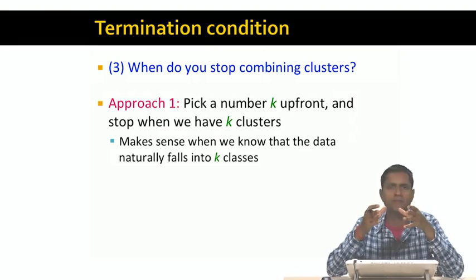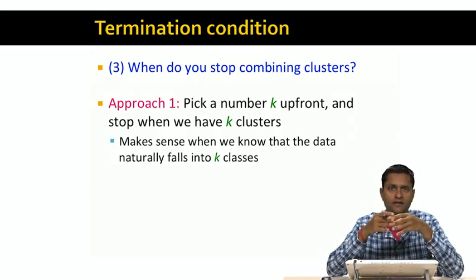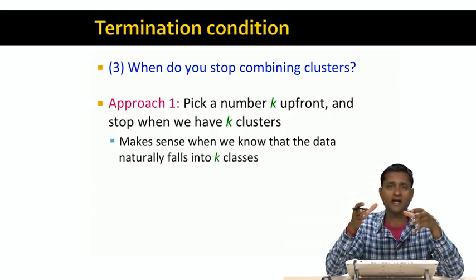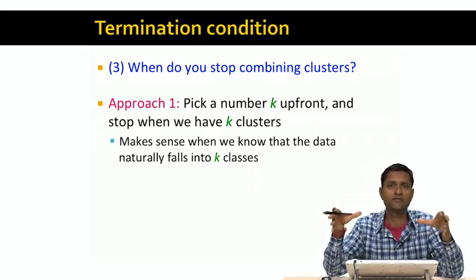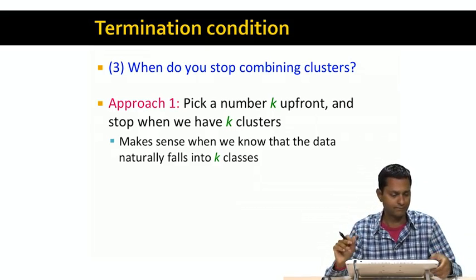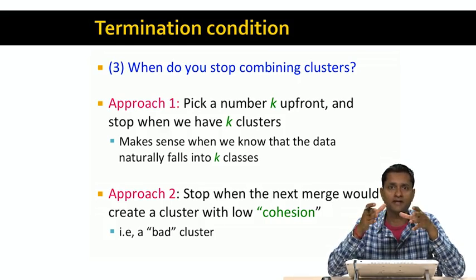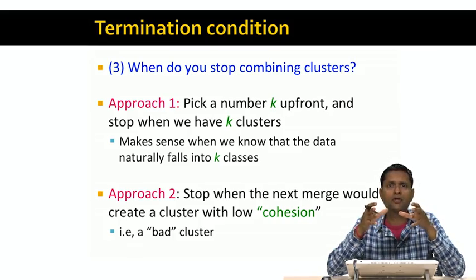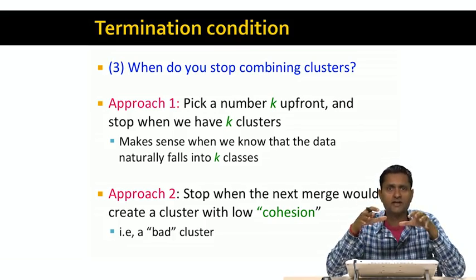The first approach is to pick a number k up front and stop when we have k clusters. This makes sense when we know up front that the data falls naturally into k classes — for example, the data might be about galaxies and quasars, and we know there are naturally two classes. The second approach, when we don't know k up front, is to keep clustering and stop when the next merge would create a bad cluster. We define a notion called cohesion, which measures the goodness of a cluster. When the cohesion value falls below a certain level, we've created a bad cluster, and we stop.